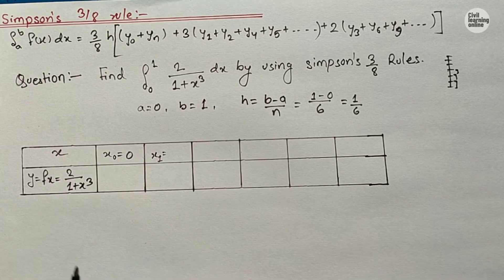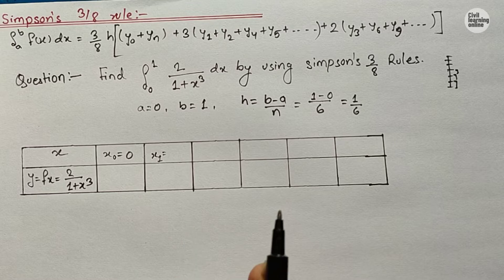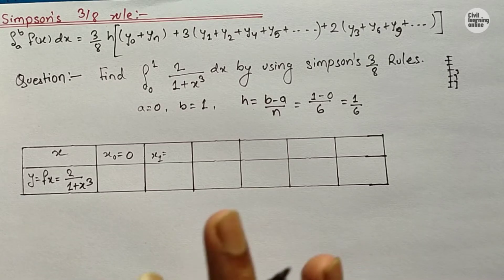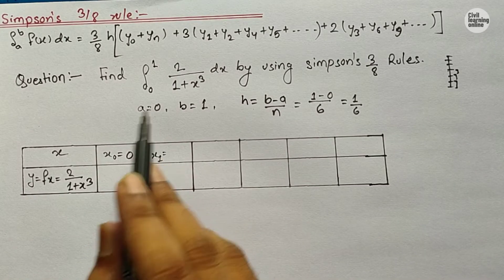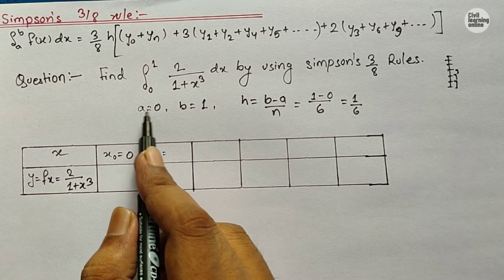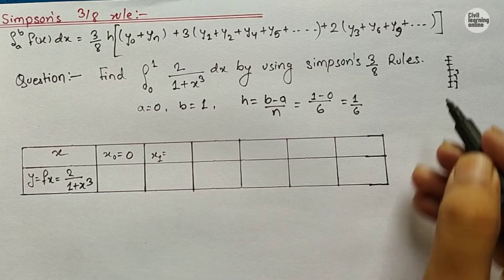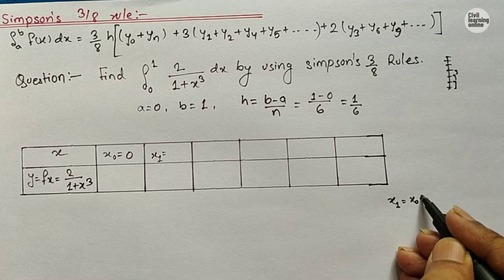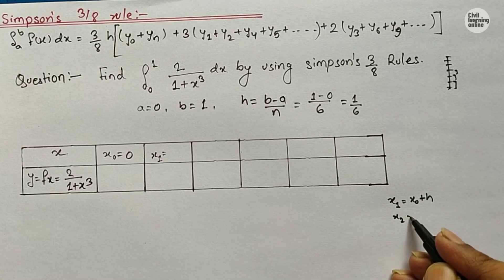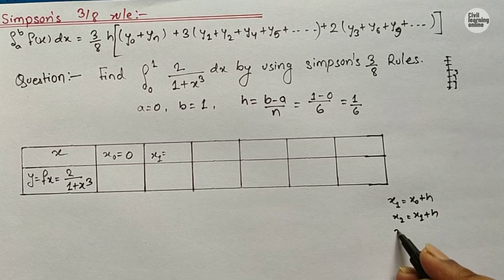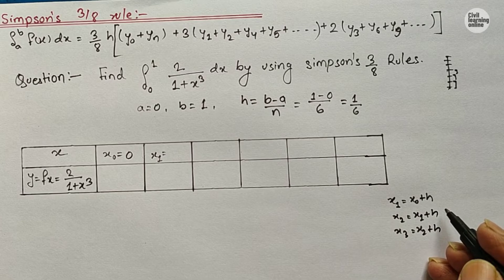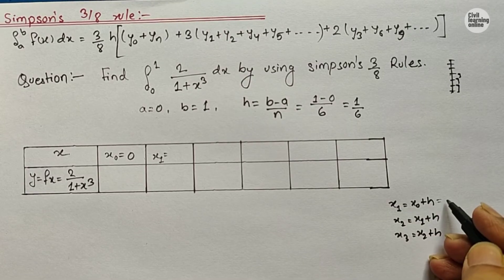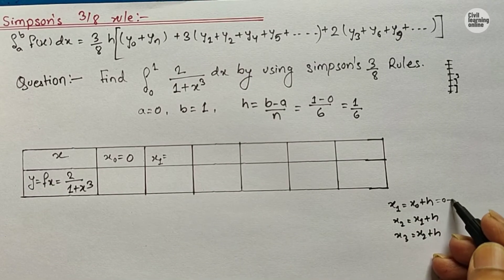So guys, now time to put the value of x0, x1, x2, x3, x4, x5, and x6. Whenever we are solving a problem, we will start with x0, and x0 will be our lower limit of the given function and of the integration - that is, we have a equals 0. So our x0 will be equal to 0 because we are beginning from here. Now when we are moving for x1, then x1 will be equal to x0 plus h. Similarly, x2 will be equal to x1 plus h. x3 will be equal to x2 plus h.